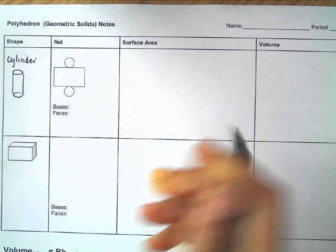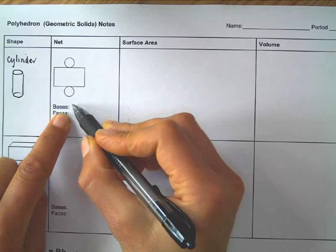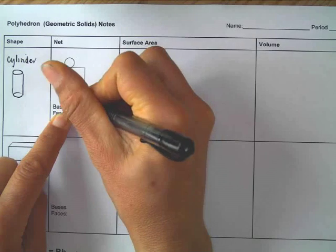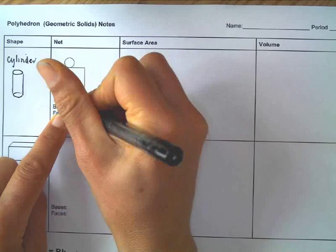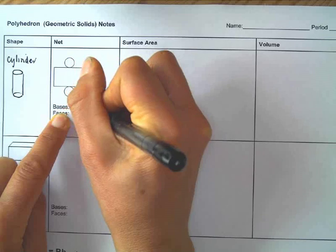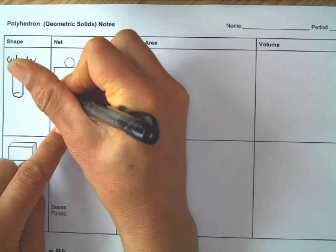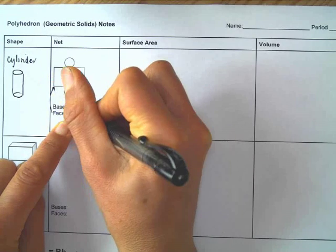The other part we're going to ask you to do is identify the bases. So the base is when they have the same top and bottom and this is a circle. And then the face, this is the face here, and that is a rectangle.